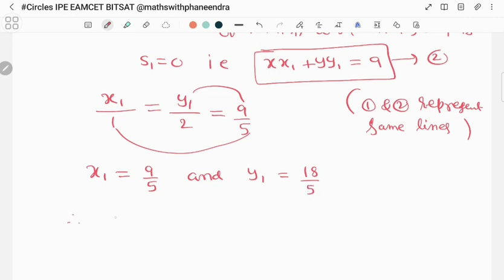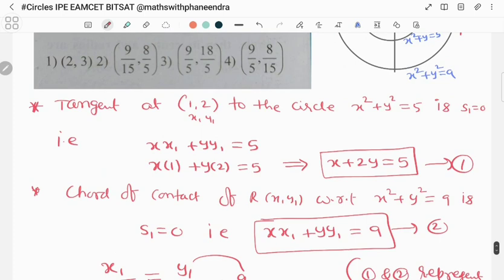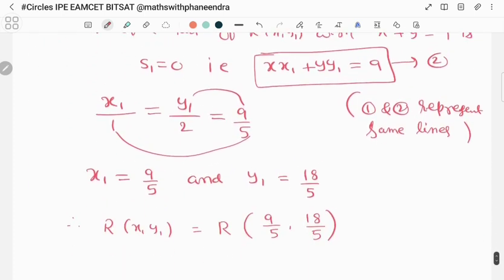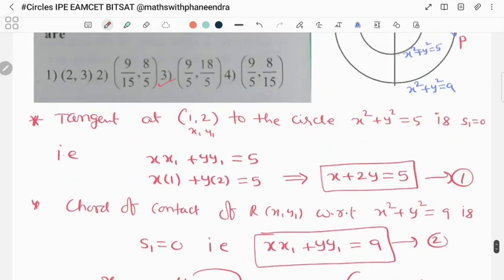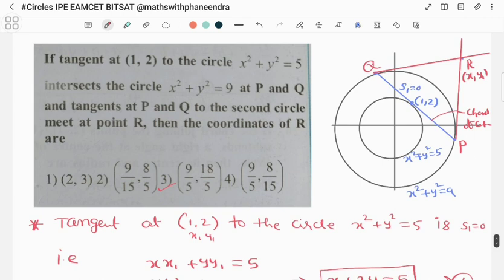Therefore, chord of contact R at (x1, y1) is equal to R at (9/5, 18/5). It is there in the third option. I hope you understand. Thank you.